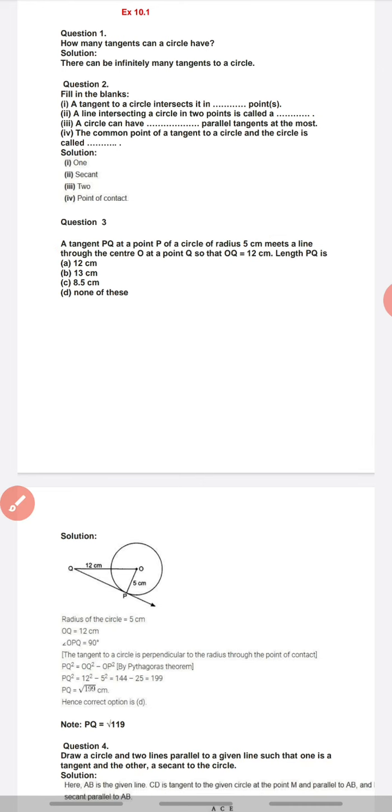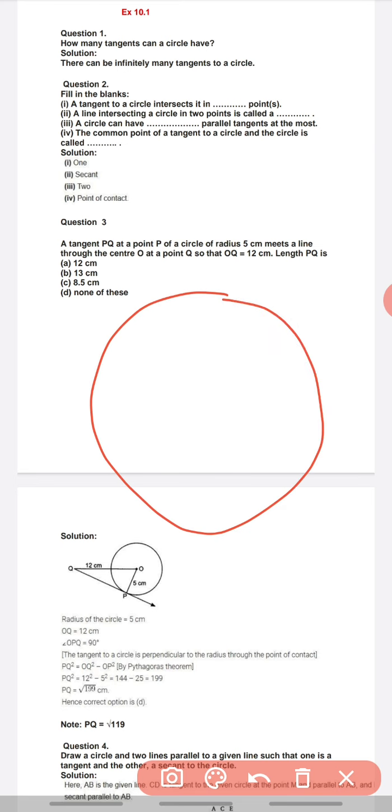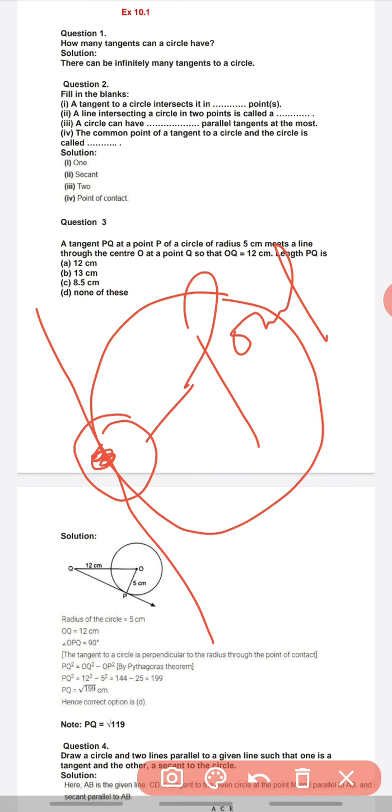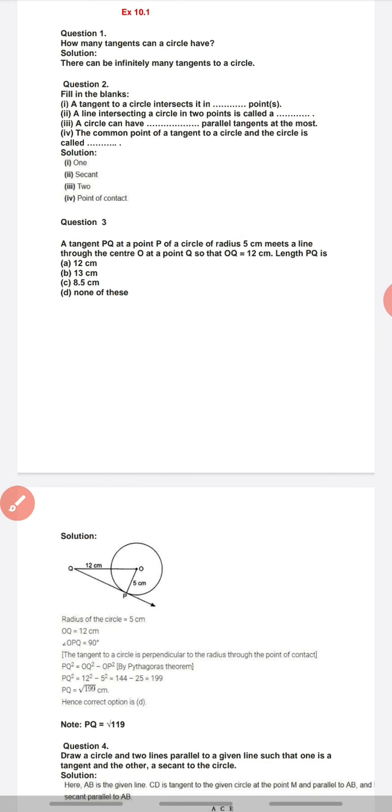Number third: A common point of a tangent to a circle and the circle is called. Kaunsa jo point ek point hai jo common hai circle aur tangent ke darmiyaan? Remember my video first, that point is known as a point of contact.